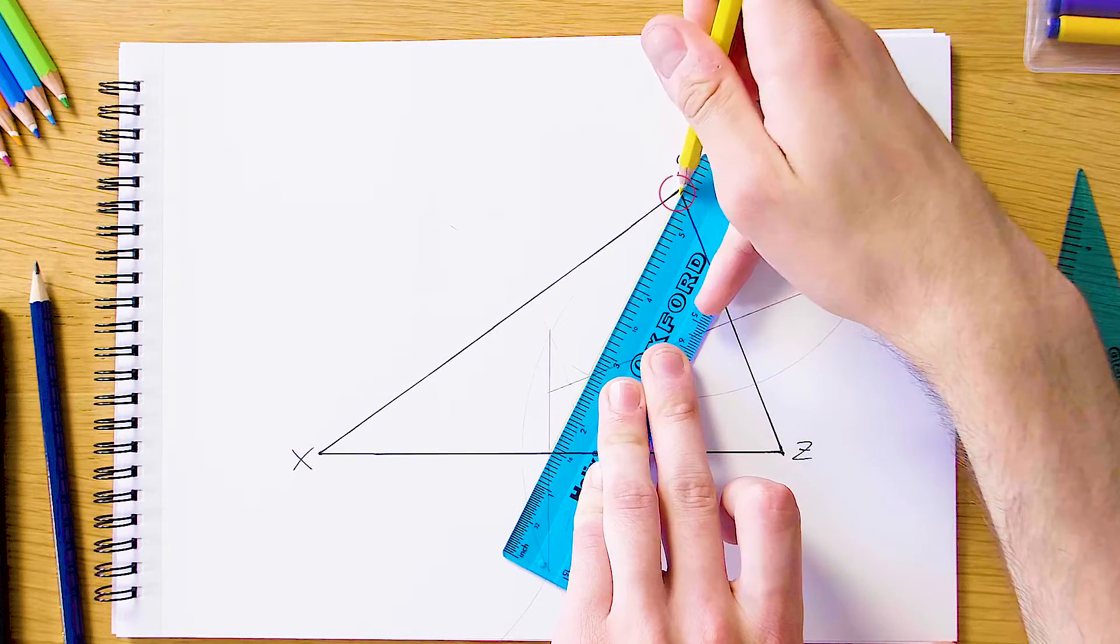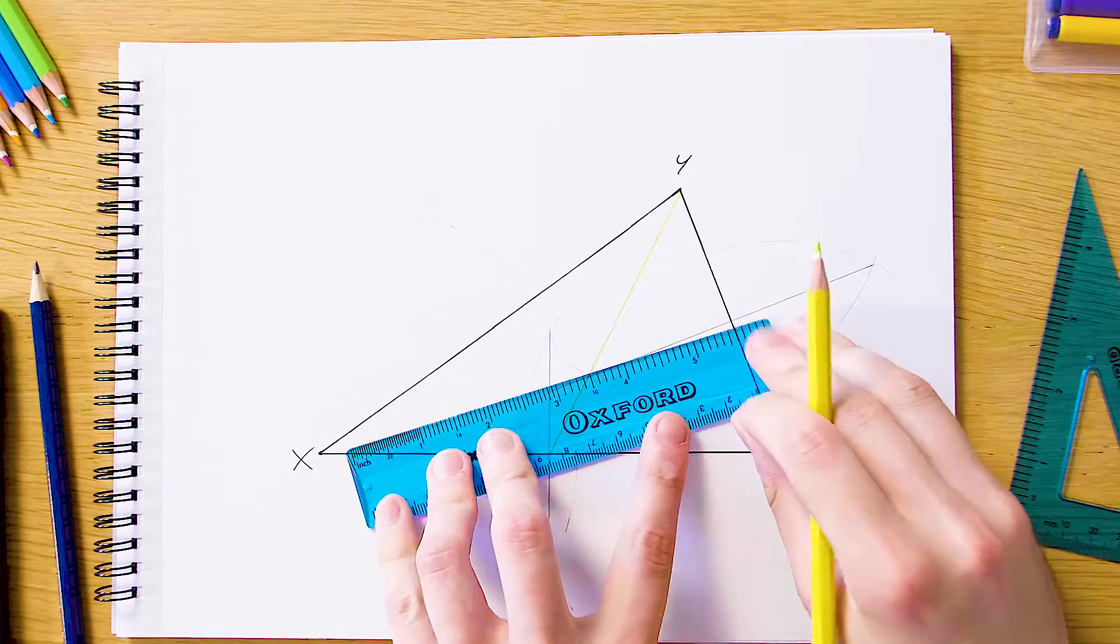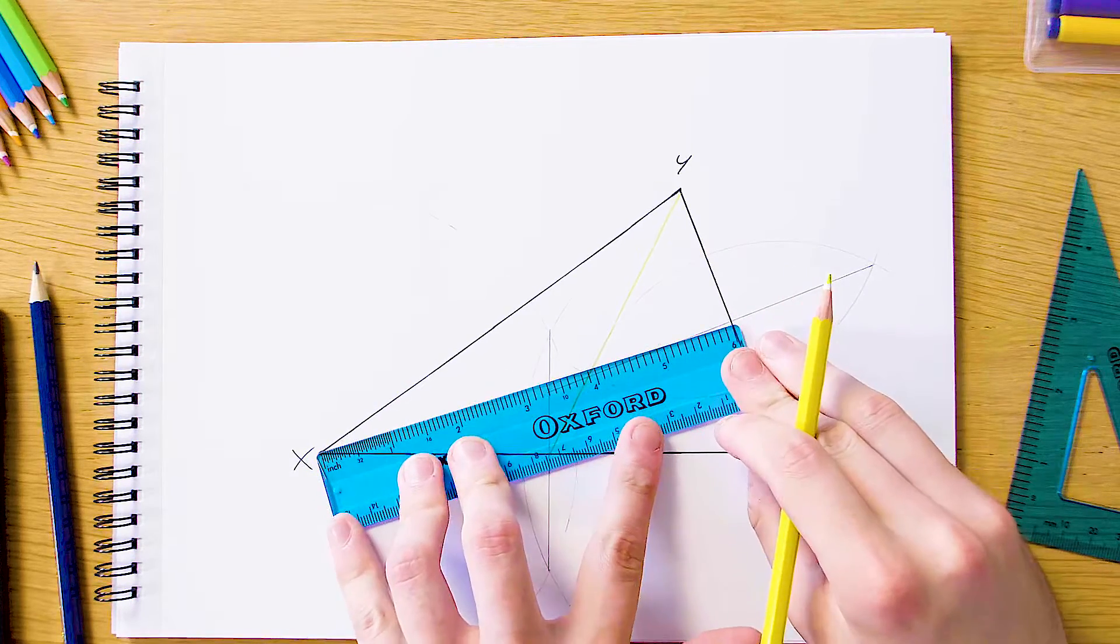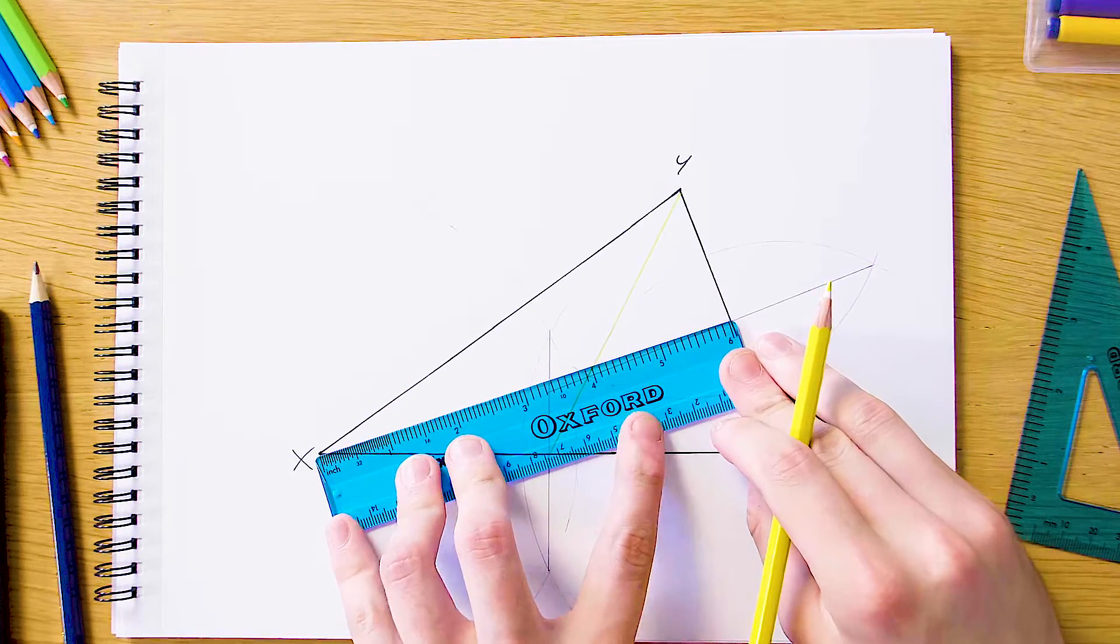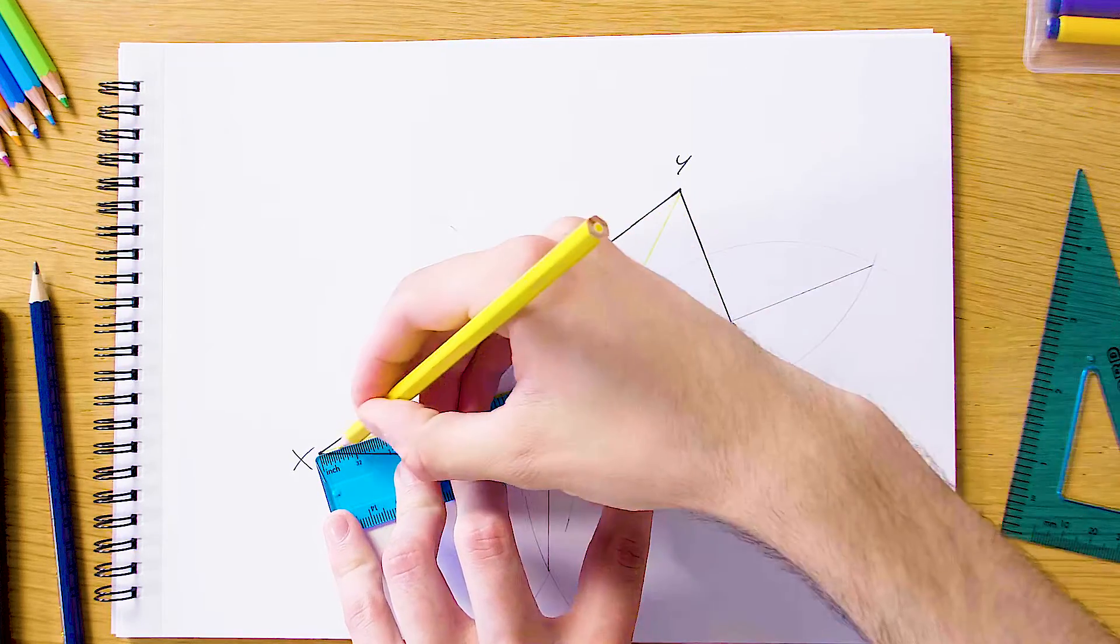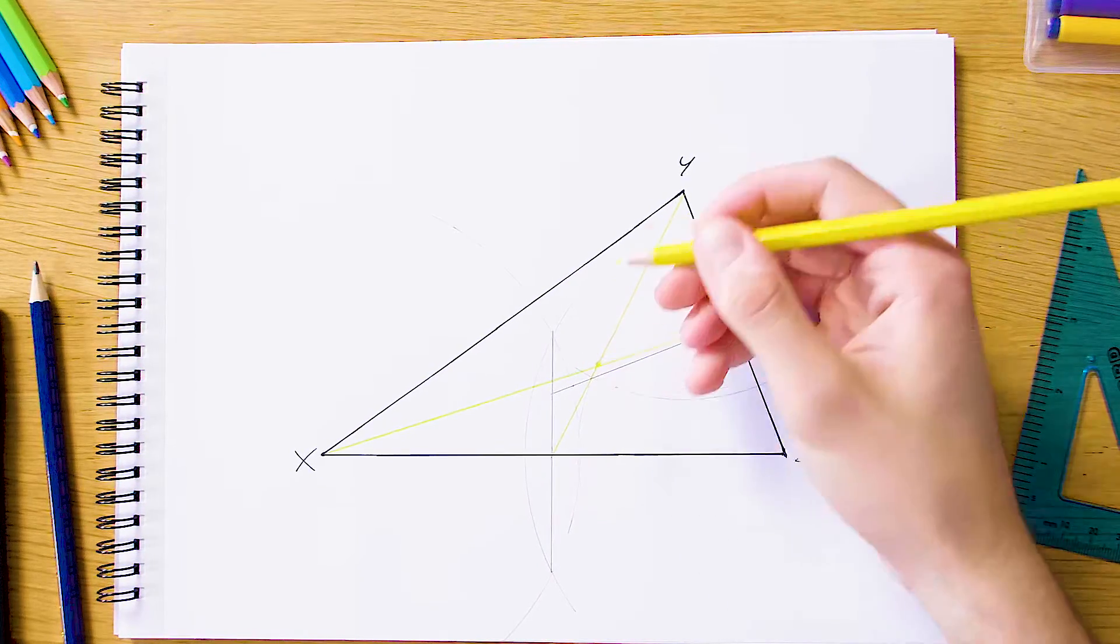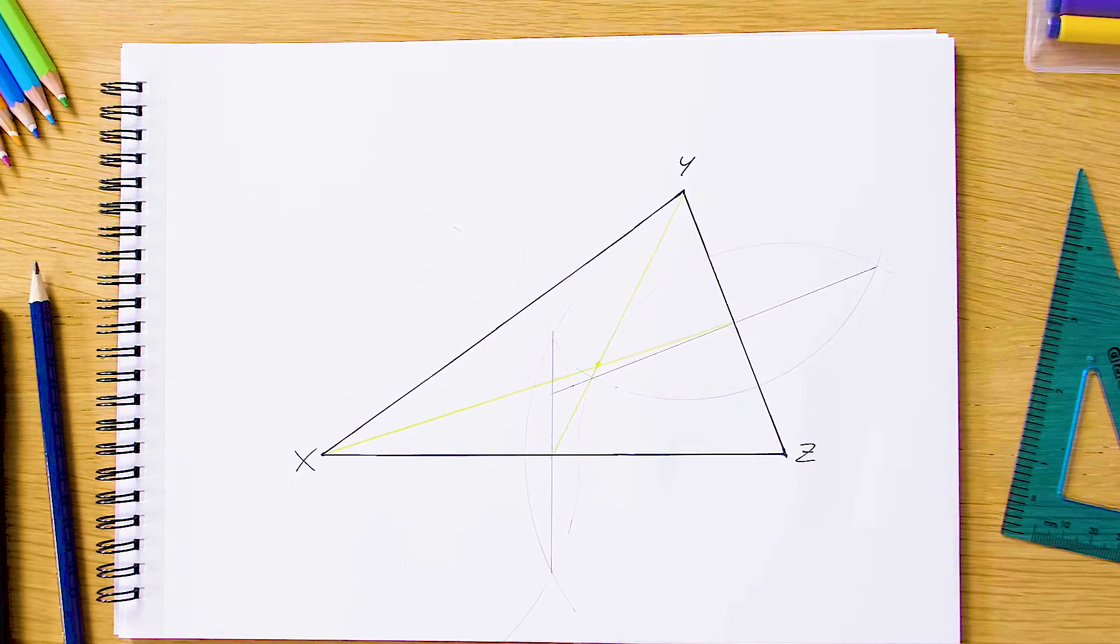You can see here in yellow what I mean—just join each middle point of the line to the far vertex, like this. Where these two yellow lines cross is our centroid, this point here. That is it for this construction. I'll see you next time.